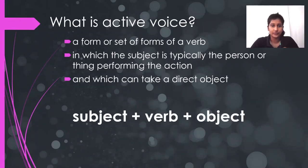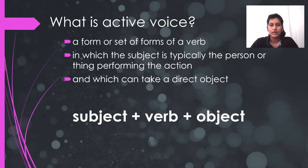First, we need to see what is active voice. The format of active voice is: first the subject, followed by the verb, and then finally the object. Active voice is a form or set of forms of a verb in which the subject is typically the person or thing performing the action. The subject can be a person or a thing, but should be who is doing the action, and which can take a direct object — meaning the object is the thing or person on whom the activity is done.